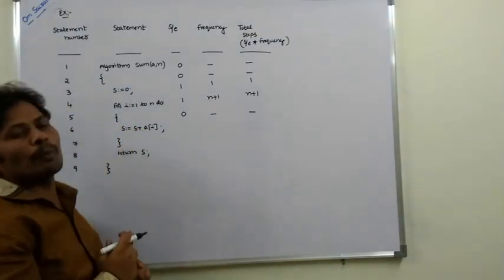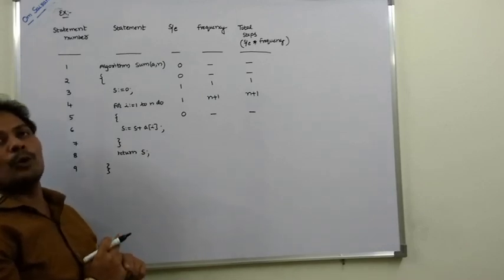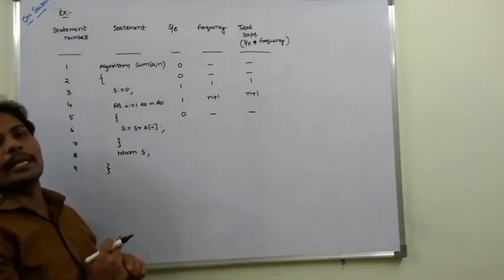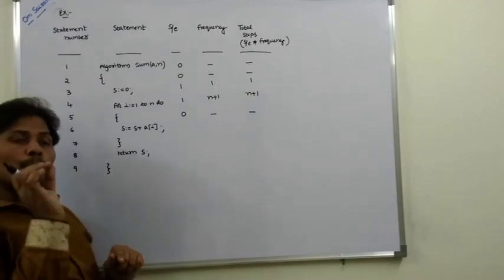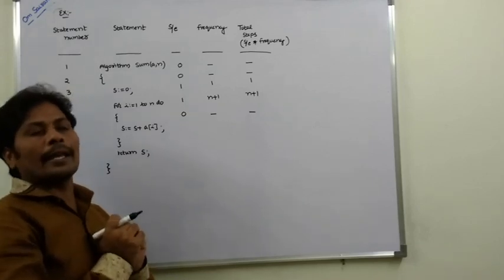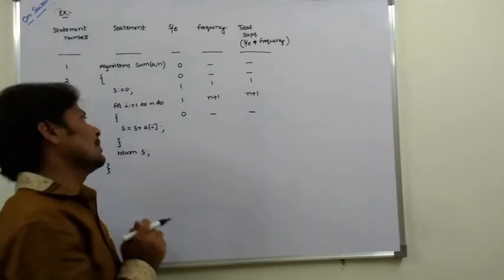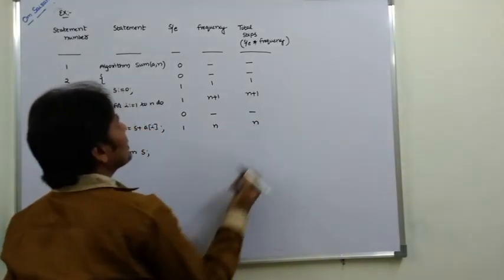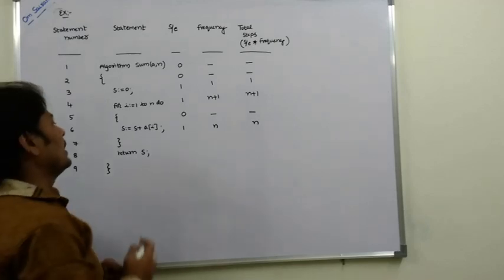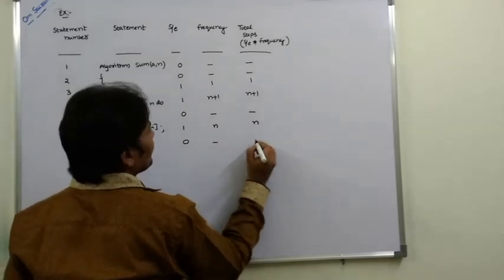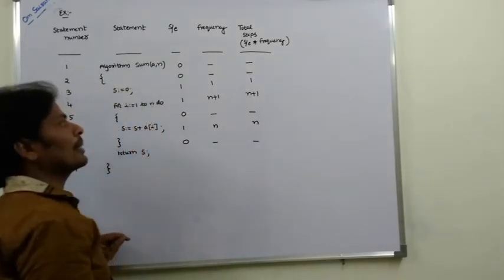The body of the for loop, S = S + A[i], executes n times (since the for loop runs n+1 times but the body executes n times). It is a valid statement with S/E = 1, frequency = n, and total steps = 1 × n = n. The closing braces are not valid statements, so frequency and total steps are 0.